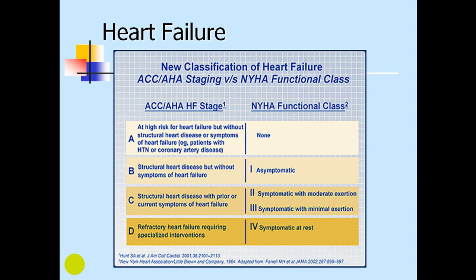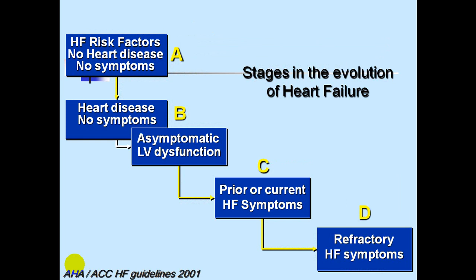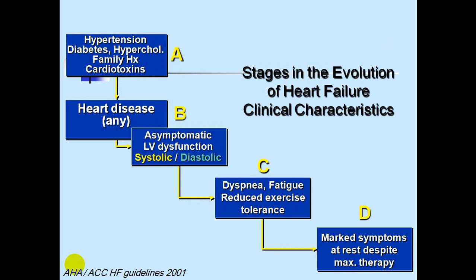The evolutional classification uses stages A, B, C, and D. Stage A is high risk with no heart disease and no symptoms — risk factors include hypertension, diabetes, hypercholesterolemia, family history, and cardiac toxins. Stage B is heart disease with no symptoms, meaning asymptomatic LV dysfunction. Stage C includes prior or current heart failure symptoms such as dyspnea, fatigue, and reduced exercise tolerance. Stage D is refractory heart failure with marked symptoms even at rest despite maximal therapy.